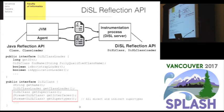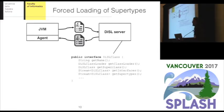All this — DieselClassLoader and DieselClass — can be accessed by the instrumentation process, something that normally would not be possible in a separate instrumentation process. In order to support the Diesel Reflection API, we made a number of modifications to the Diesel framework. The first one is related to class loading inside the JVM.